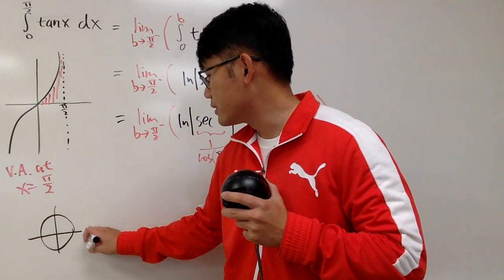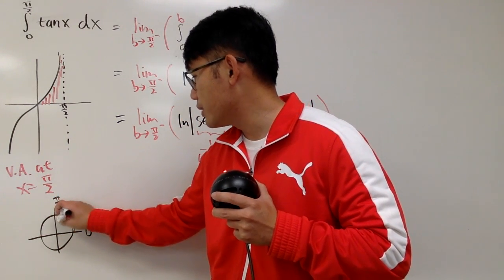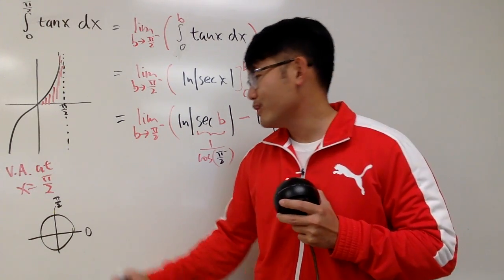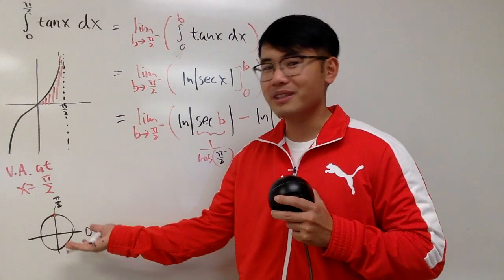So, on the unit circle, of course, this is 0, this is where the pi over 2 is. And remember, on the unit circle, cosine is the x value. So, if you are right here, of course, cosine is 0.